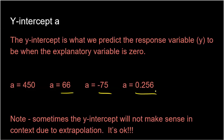Sometimes the y-intercept will not make sense in context due to extrapolation. The y-intercept is always what happens when x is 0, but if none of your data was around x equaling 0, it's probably not going to make a whole lot of sense. Remember, linear regression models are only good for where the data came from. This doesn't mean the y-intercept is wrong — the context of it just might not make a whole lot of sense.